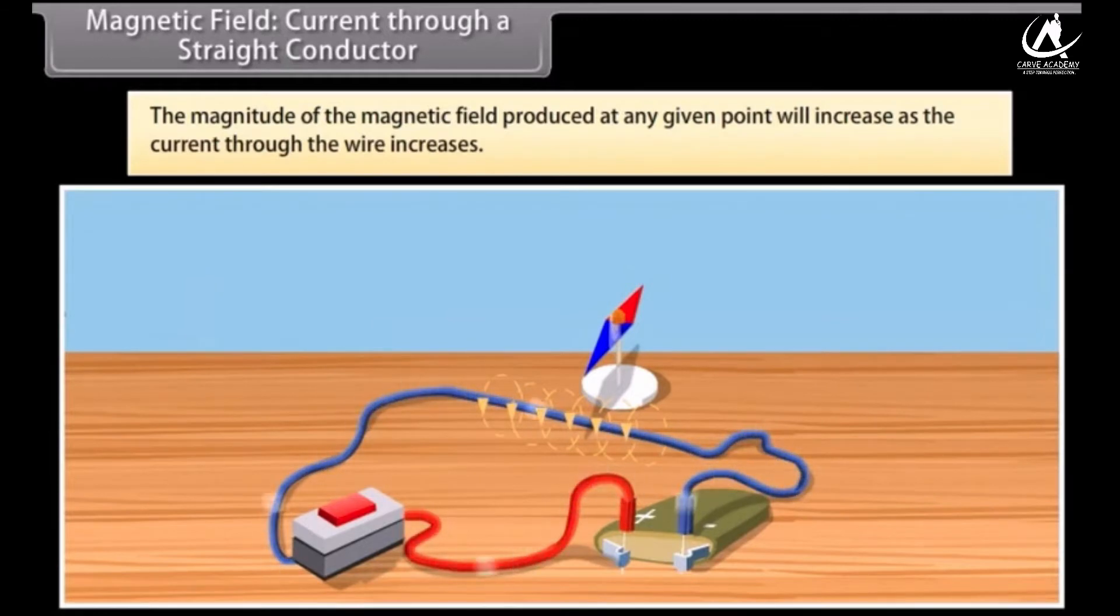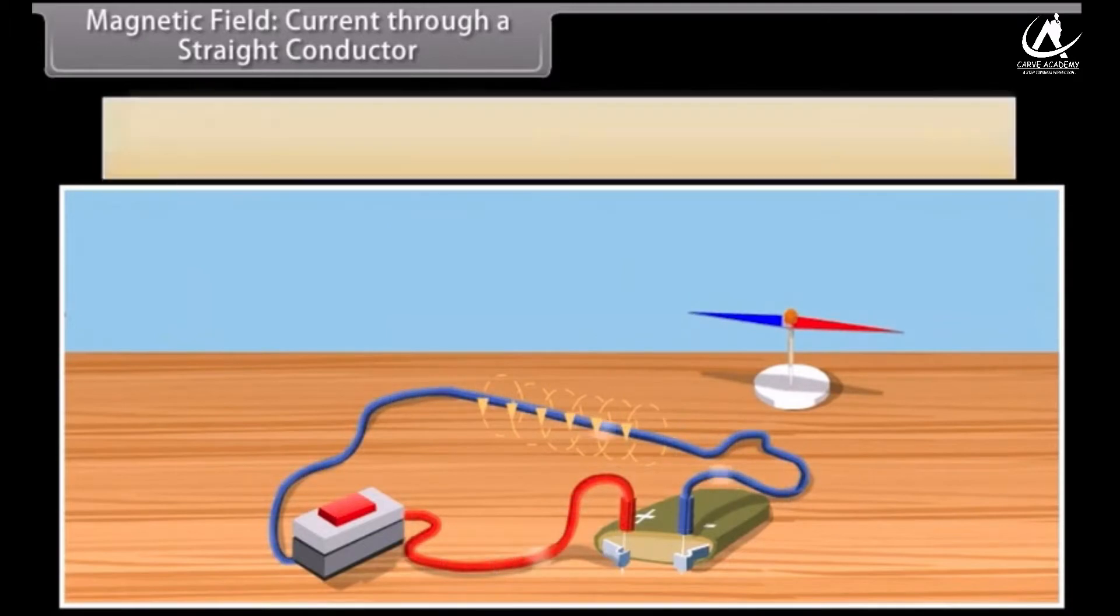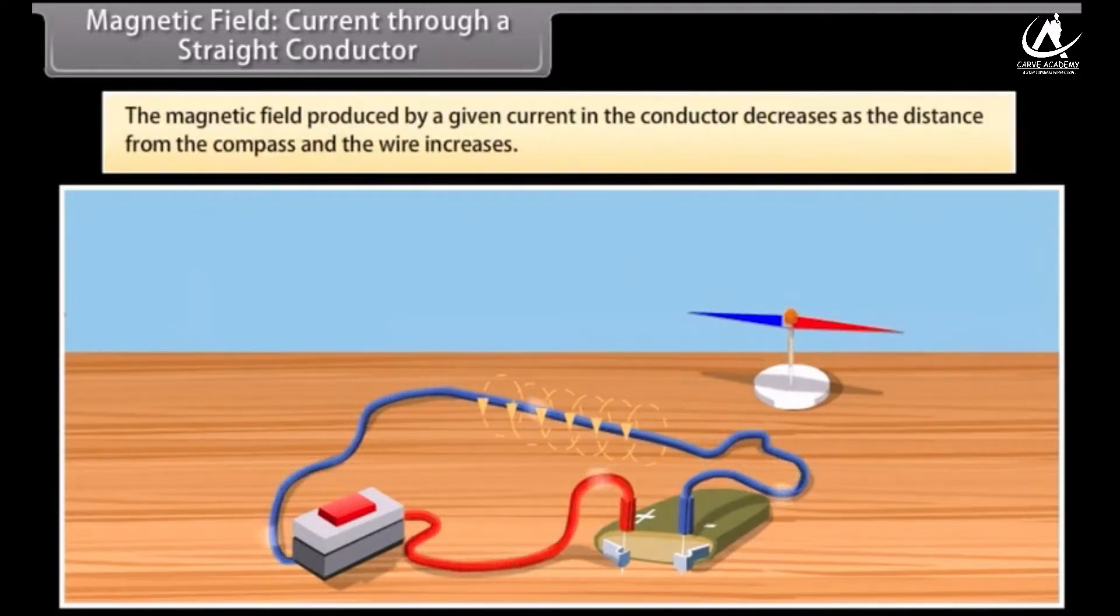Now, try moving the compass away from the current passing through the wire. You will see that the magnetic field produced by a given current in the conductor decreases as the distance from the compass and the wire increases.